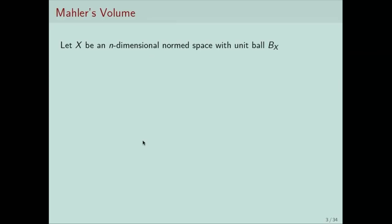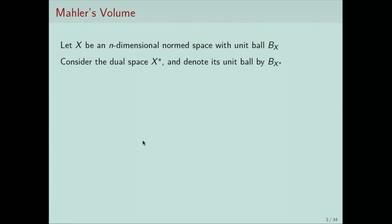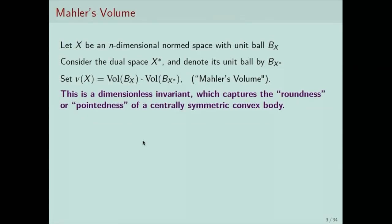More precisely, if X is an n-dimensional normed space, I'm going to denote its unit ball by B of X. This is a centrally symmetric convex body. I will denote by B(X*) the unit ball of the dual space. Mahler introduced the following quantity — just the volume product of these two unit balls — known as the Mahler volume, or the volume product. Note that it has no dimension, so it's homogeneous of degree zero.